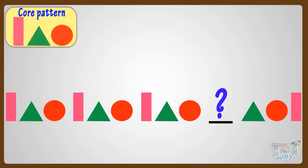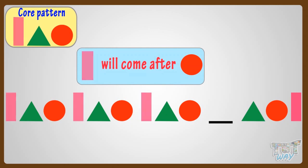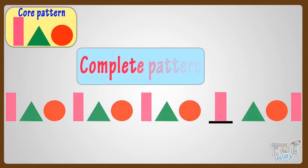Now we will find out what will come in the blank space to complete the pattern. From the core pattern, we see that after circle, we have to repeat the core pattern. So rectangle will come after the circle, as the core pattern starts with a rectangle. Yes, this will make the pattern complete.